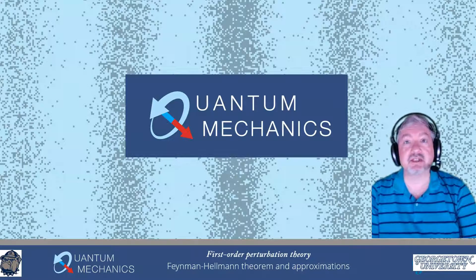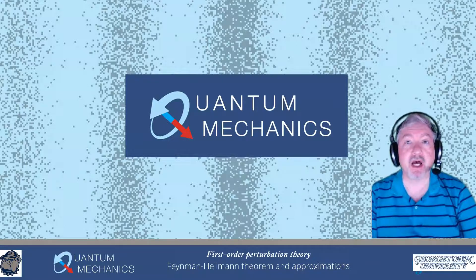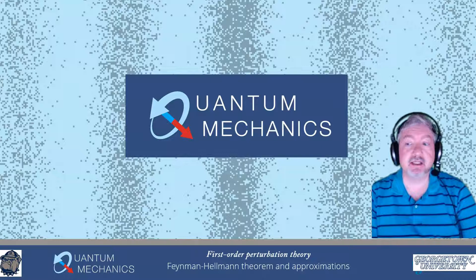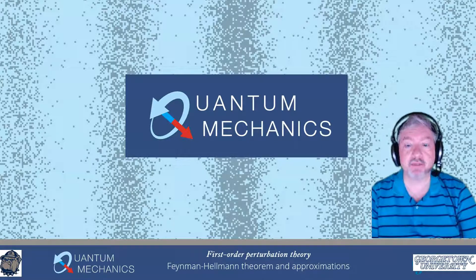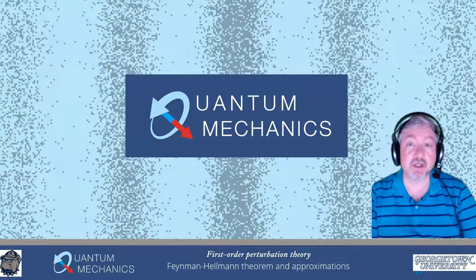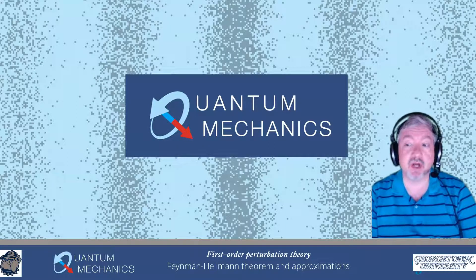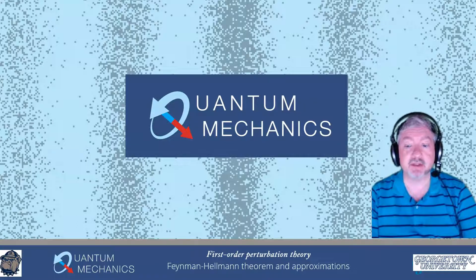Welcome to the first lecture in module 8. In module 8, we're going to be looking at a number of different approximations for quantum mechanics. This first lecture, we'll be talking about first-order perturbation theory, and we're going to be deriving it through a technique called the Feynman-Hellman theorem.